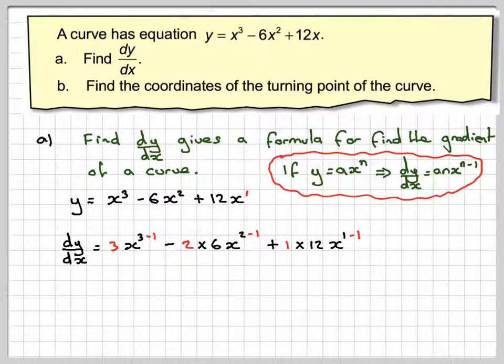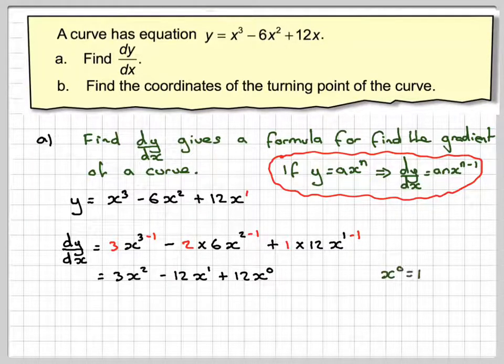Simplifying that, this becomes 3x squared. This becomes minus 12x to the 1. And this becomes 12x to the 0. But x to the 0 is equal to 1. So this bit here will just become 12.